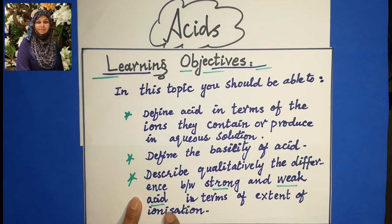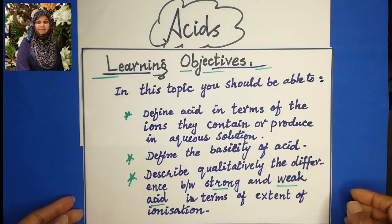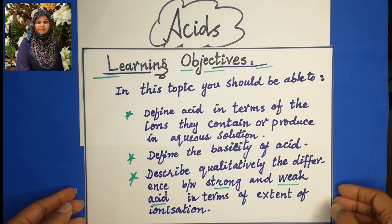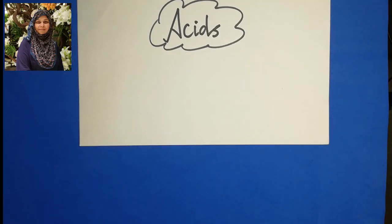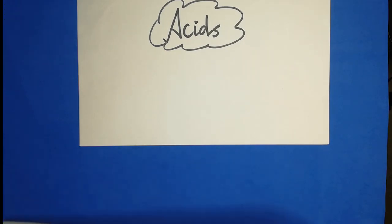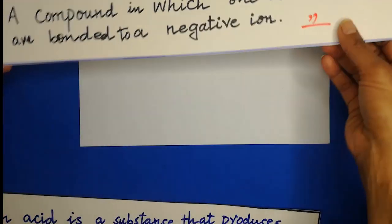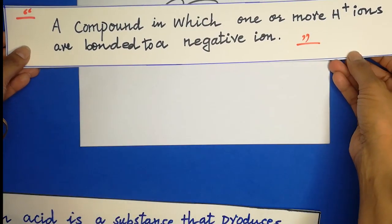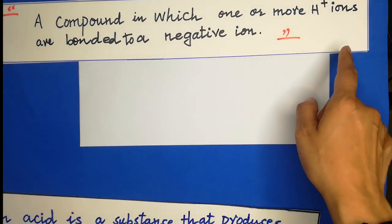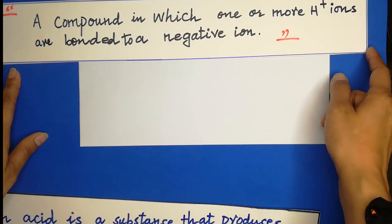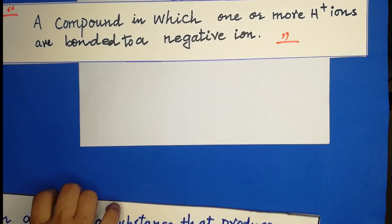The third and last objective of this lesson is to describe qualitatively the difference between strong and weak acid in terms of extent of ionization. So these are the objectives we are going to consider in this lesson. Now, how can we define what an acid is? The first definition is: acid is a compound in which one or more hydrogen ions are bonded to a negative ion.